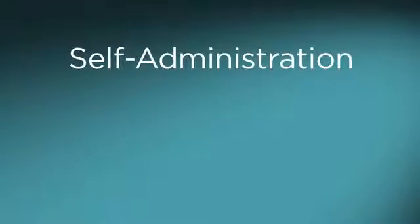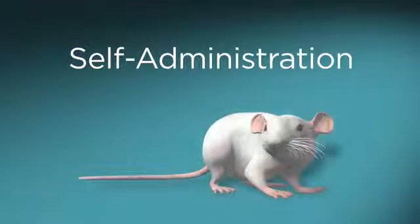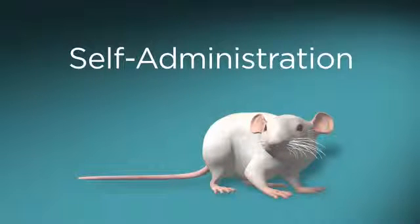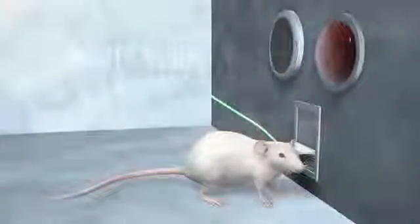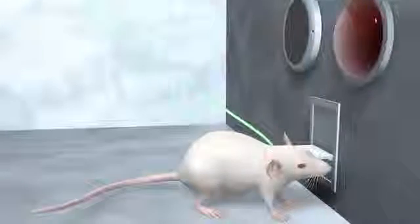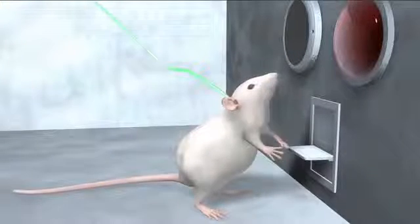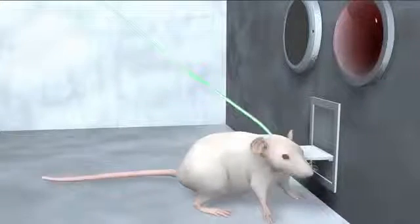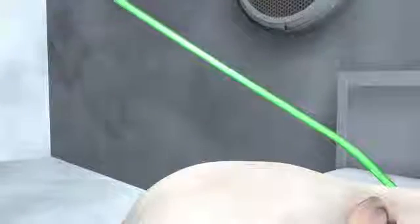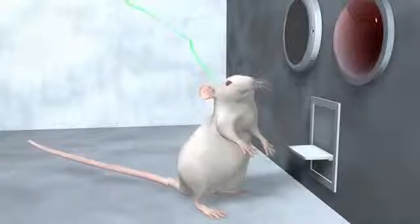Self-administration. In this phase, a rat learns to press a lever to self-administer a drug. It also learns to associate a cue with pressing the lever and feeling the drug's pleasurable effect. The rat finds itself in a test chamber with a lever. It presses the lever. A tone sounds and a light flashes. Simultaneously, the rat receives a dose of cocaine and feels a surge of pleasure.